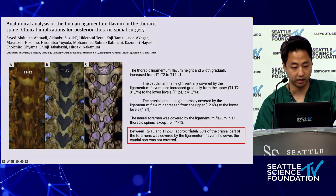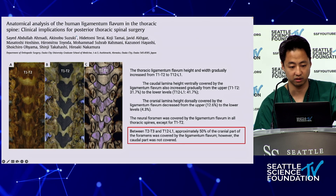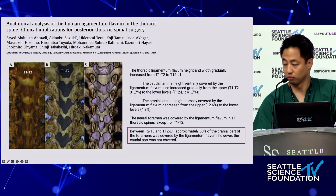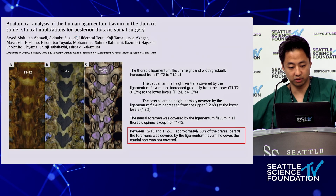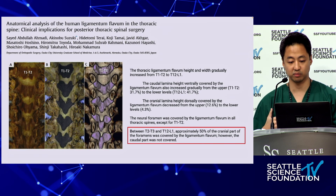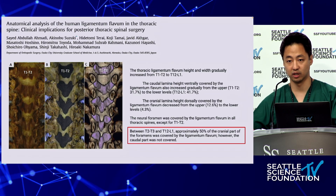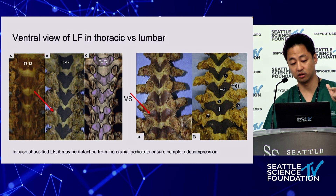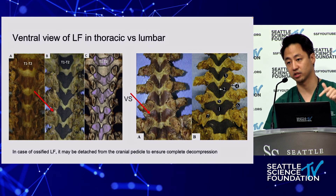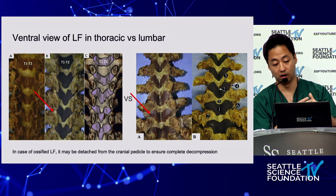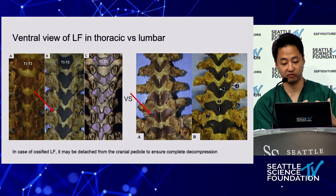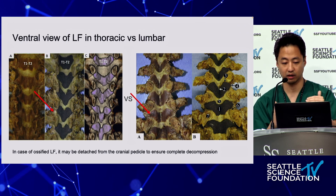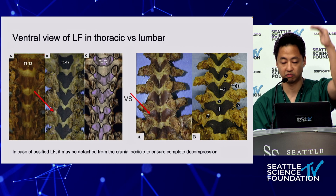Moving on to the thoracic spine, you can appreciate the V-shape of each ligamentum flavum outlined on the ventral surface. Notice that between T2-3 and moving down, approximately 50% of the cranial part of the foramen was covered — which is the opposite of the lumbar foramen. In lumbar the ligamentum flavum covers the caudal pedicle, but in thoracic spine it covers the cranial pedicle.